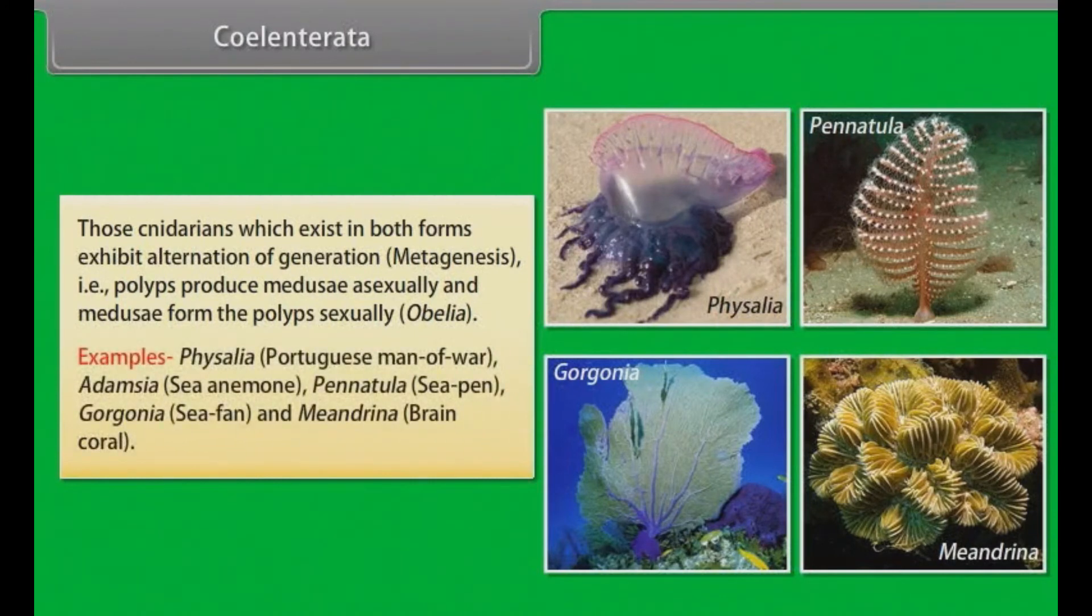Examples: Physalia, also known as Portuguese man of war. Adamsia, also known as sea anemone. Pennatula, also known as sea pen. Gorgonia, also known as sea fan. Meandrina, also known as brain coral.